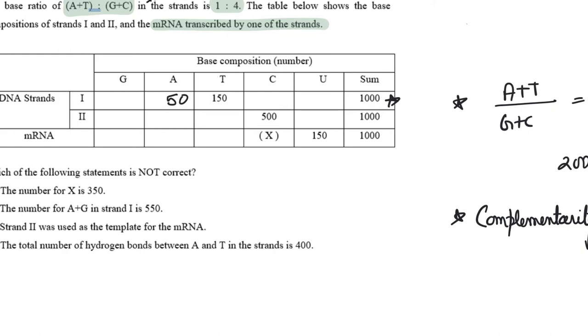Now complementarity says A has to go with T. So if there's 150 T on the second strand, that has to be 150 A. If there's 50 A on the second strand, it has to be 50 T. Why?